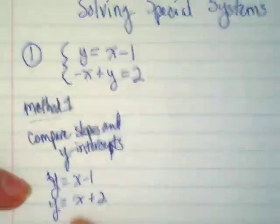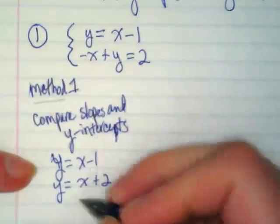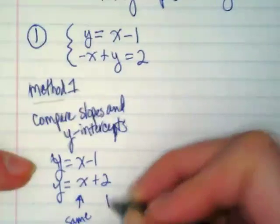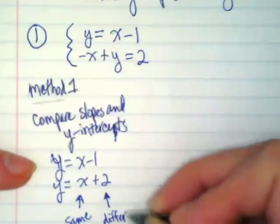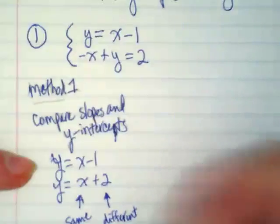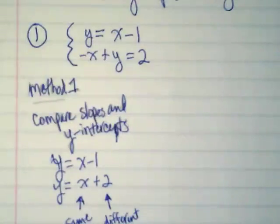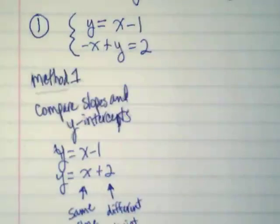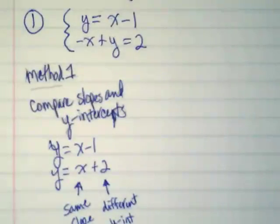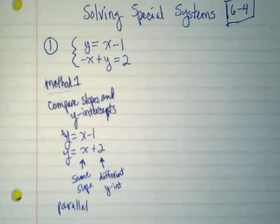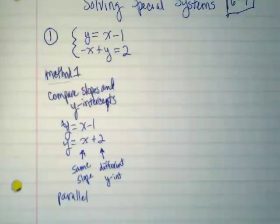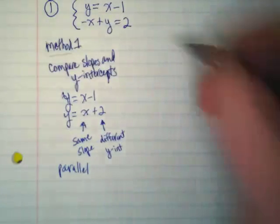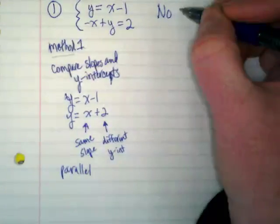What do you notice about the slopes? They're the same. What do you notice about the y-intercept? They're different. What do we know about equations when they're graphed that have the same slope? They're parallel. And if the lines are parallel, are they ever going to cross? No. And if they're never going to cross, we don't get an x-y pair. We don't get an x-y pair because they never have a place where they're going to intersect.